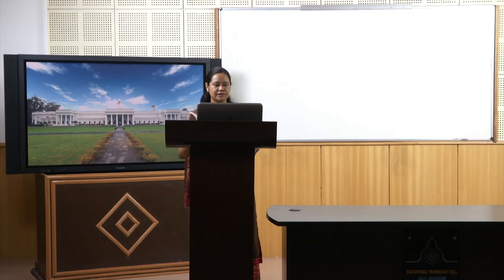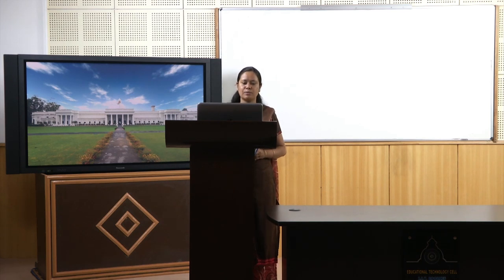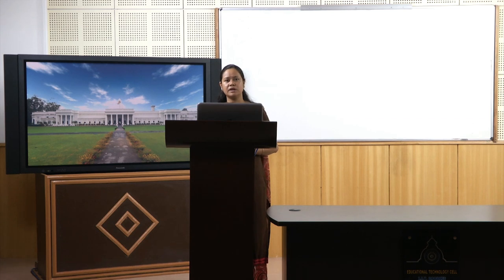Before going into the details of architecture, let us look at the hardware components used in these architectures. First, since it is software defined radio, a digital signal processor is part of the system. After down conversion and digitization, all processing and coding happens in this domain. Examples include a personal computer, laptop, FPGAs, and DSP processors such as the Shark-based DSP from Analog Devices and ARM Cortex-M8 and Cortex-M4 series. GNU Radio using a Universal Software Radio Peripheral with FPGA is also very popular, providing very high speeds.